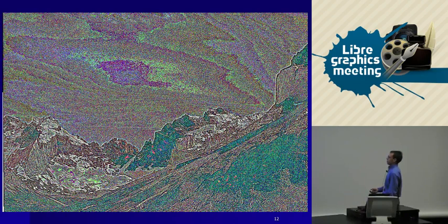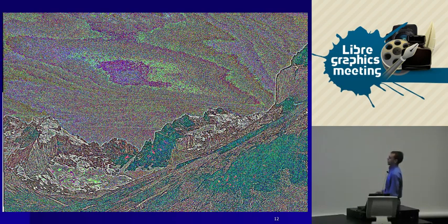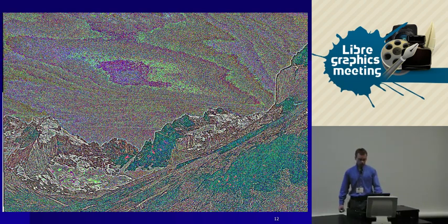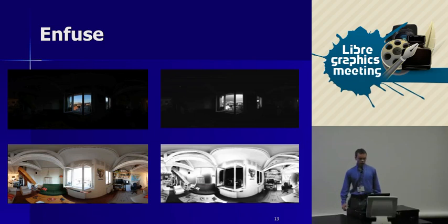Here's roughly what that looks like — with contrast and brightness exaggerated so you can see it. At the top level of the pyramid you see basically all the really fine details, and as you go further down the stack you get to things like clouds and more coarse-grained objects.